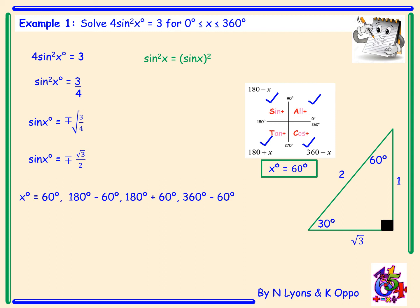The angle in the first quadrant is 60 degrees. To obtain the angle in the second quadrant: 180 minus 60. The third quadrant: 180 plus 60. And the fourth quadrant: 360 minus 60. This gives four final answers: 60, 120, 240, and 300 degrees.